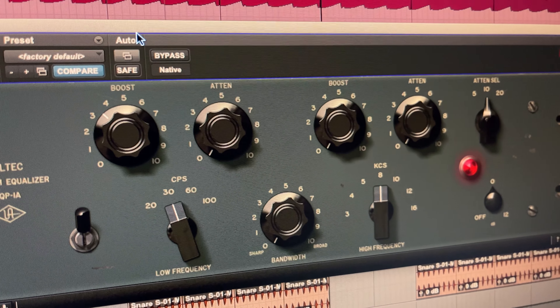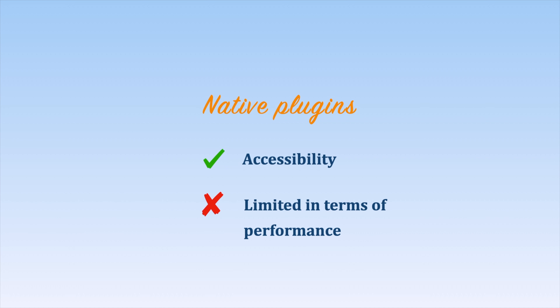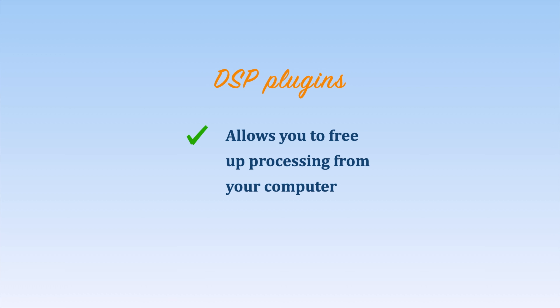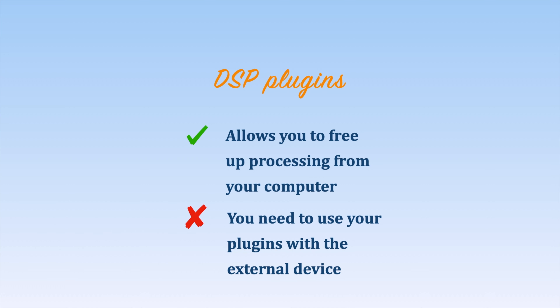This type of processing will work exclusively with its associated hardware device, which can quickly become a problem if you want to use your plugins outside your studio, as you will have to bring the unit with you. To wrap things up, each type of plugin processing has one pro and one con. The pro of native plugins is their accessibility — as long as you have access to your computer, you have access to your plugins, when you want, where you want. But the big con is that you can get stuck if you use too many plugins or if your host processor is not powerful enough. As for DSP plugins, the big pro is that it allows you to free up processing from your host computer and use it for other calculations, which is a big advantage for performance. But the biggest con is that these plugins will not work without their external DSP processing device — you always have to have them with you if you want to use them.